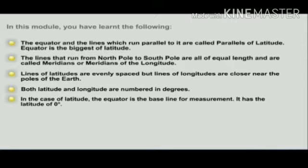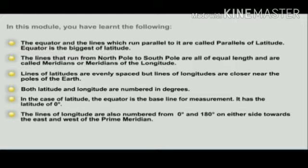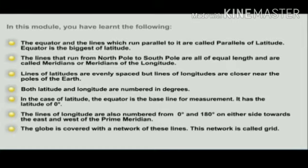In the case of latitude, the equator is the base line for measurement — it has a latitude of 0 degrees. The lines of longitude are also numbered from 0 degrees to 180 degrees on either side towards the east and west of the prime meridian. The globe is covered with a network of these lines, and this network is called the grid system.